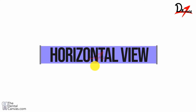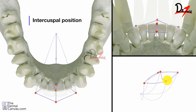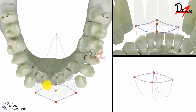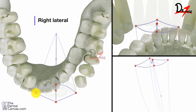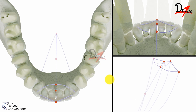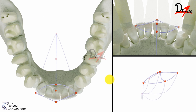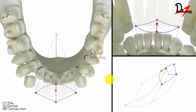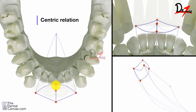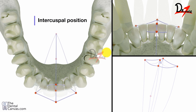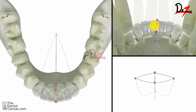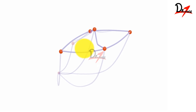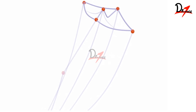Now the horizontal view. Here we have a characteristic diamond tracing — you can appreciate the diamond tracing here. This point is the centric relation, then here is the right lateral, then on protrusion we have the maximum protrusion, then the left lateral, then centric relation again. This will be the intercuspal position, and then this is the maximum protrusion. This is the envelope of motion. The dark purple represents the diamond tracing, and the light purple ones are the motion in another plane.